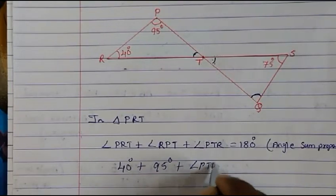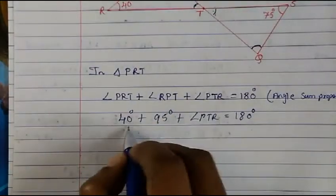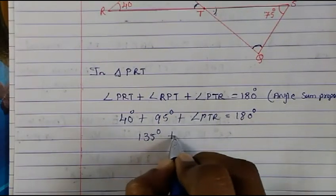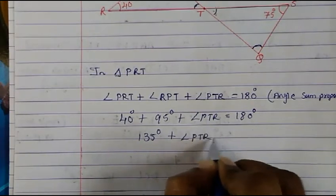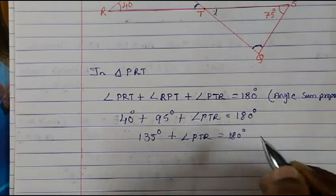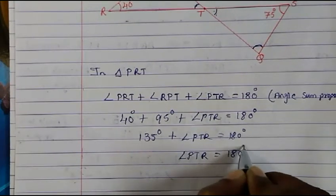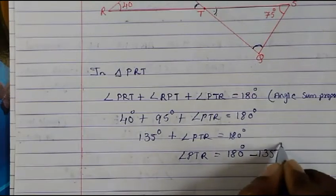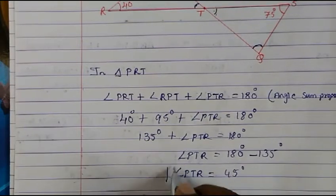We don't know angle PTR, so we keep it. When we sum up the known angles, we get 135. So 135 plus angle PTR equals 180, which gives us angle PTR equal to 45 degrees.